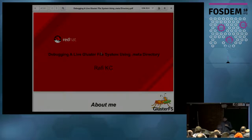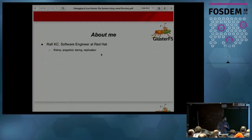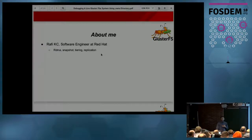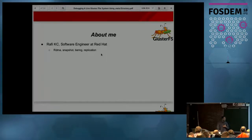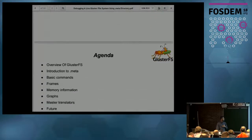Before jumping into the agenda, I'll introduce myself. I'm Rafi, a software engineer at Red Hat. I've been at Red Hat for almost three and a half years. I've worked on components like RDMA — remote direct memory access — snapshot, tiering, and replication.